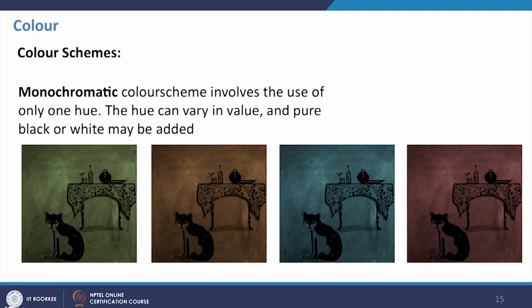Here we have examples of the same painting in different monochromatic schemes — one with a bluish hue and variations in tints and shades, and another with purple, green, and brownish hues. To summarize, we discussed different elements of design: line, shape and form, illusion of space, color, and texture and pattern. By playing with the permutation and combination of these elements, we can create different kinds of visual style. The next module will cover the principles of design and how these design elements can be used to create different designs. Thank you.